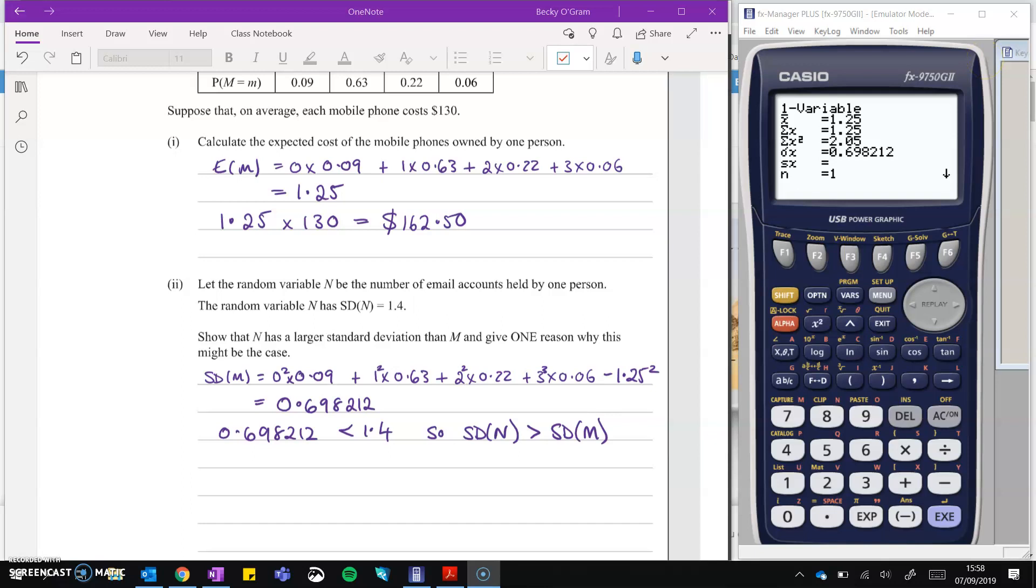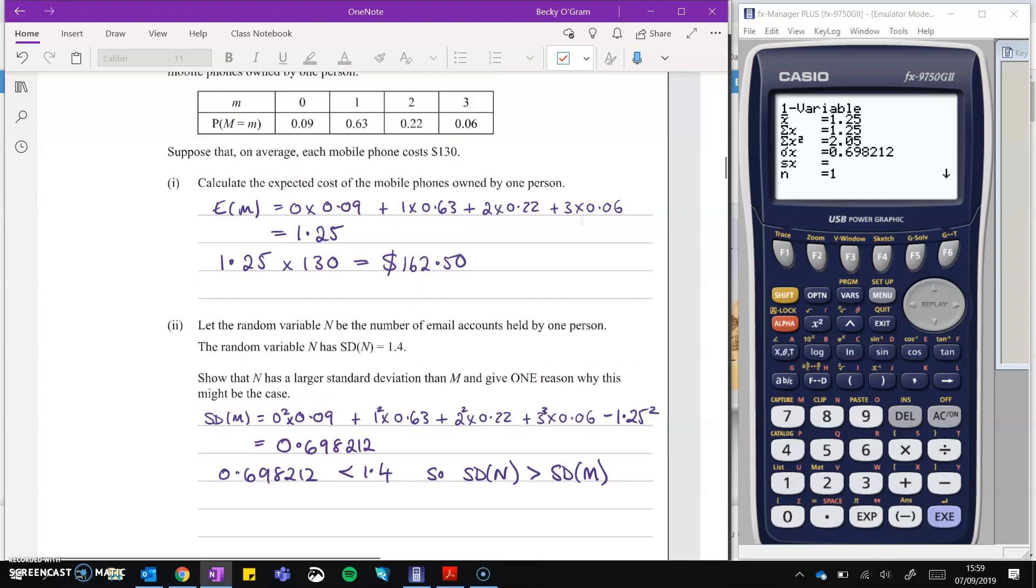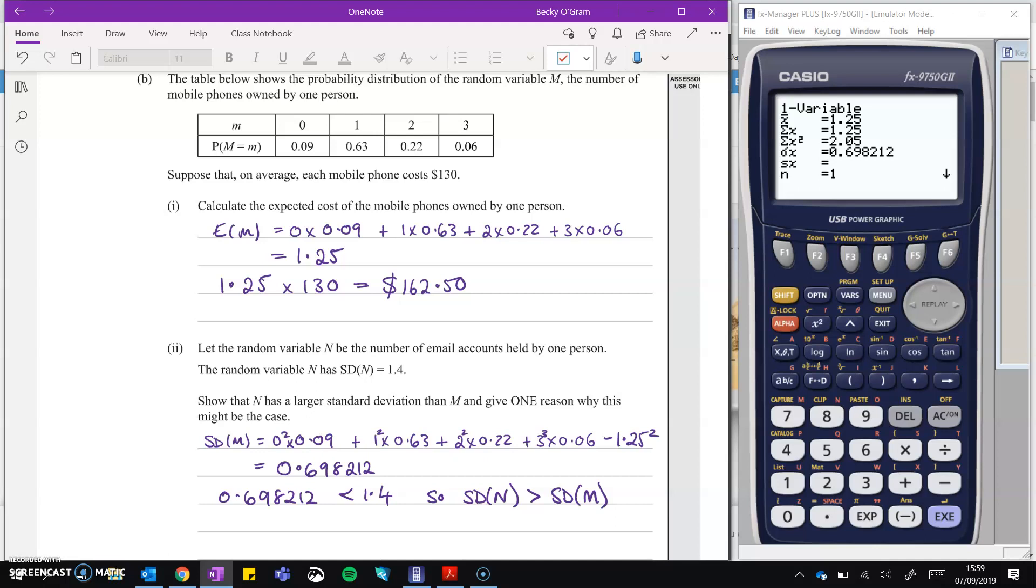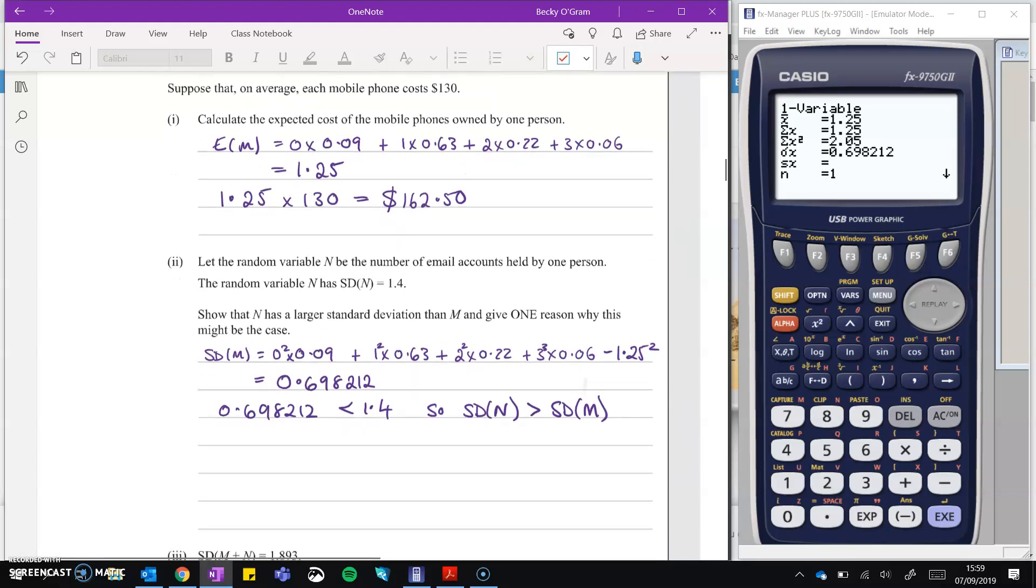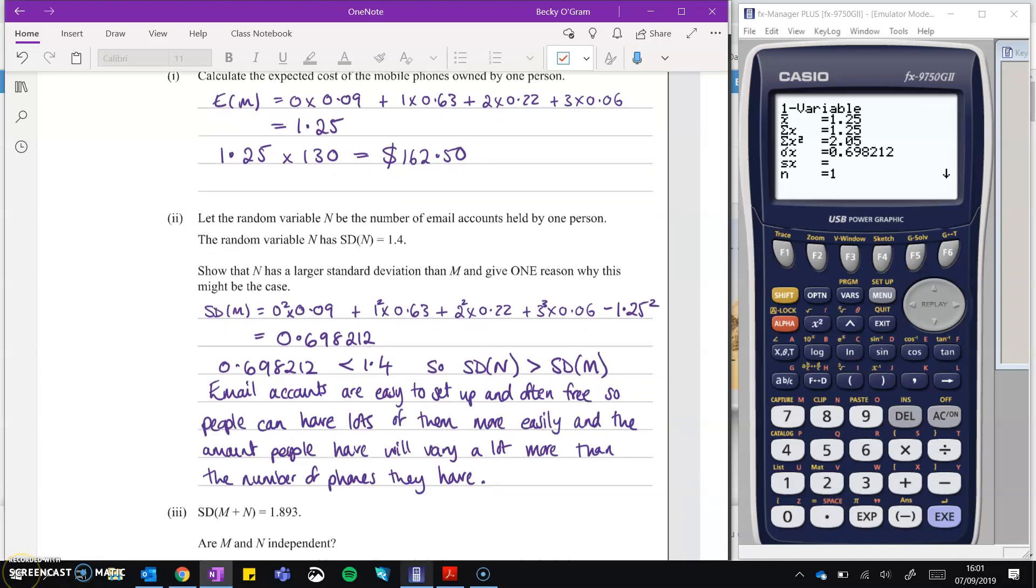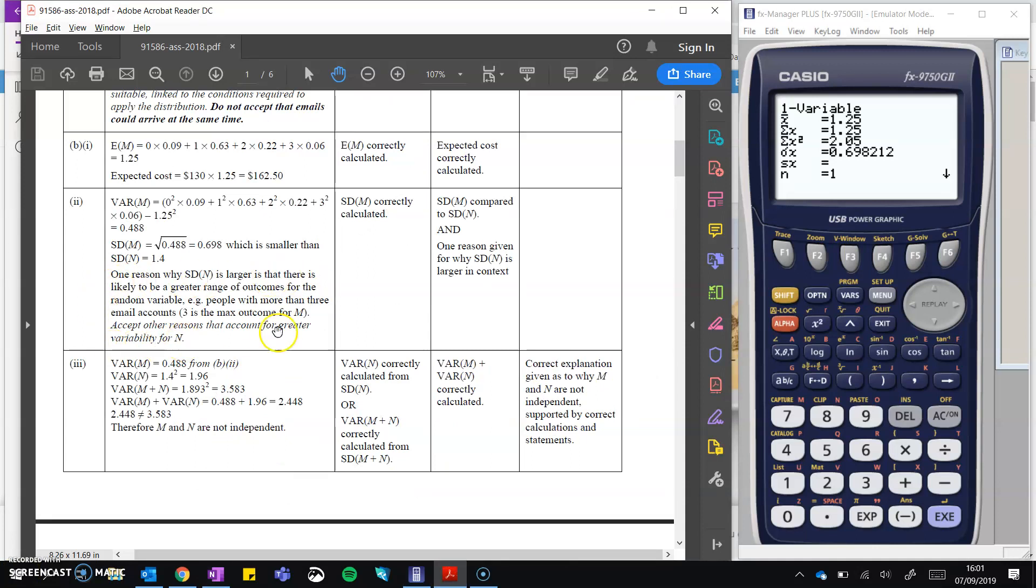And give a reason why that might be the case. So why might the number of email accounts held by somebody vary more than the number of phones that they own? So I would think along the lines of, email accounts are easy to come by. They're usually free. And you can make lots of them very easily. And we can certainly have more than three. Where M only went up to three. We wouldn't expect people to have lots more phones. It's kind of standard for people to have one phone. Maybe two for business purposes. But we'll put that into some kind of sentence. And if we go take a look at the mark scheme. Any acceptable reason that accounts for greater variability of N is going to give you that mark. So it's quite an easy one. So if you got the standard deviation right, you got the U mark. And gave a reason why you thought it would be larger in the context of this problem. Then you got the R mark for working towards merit.